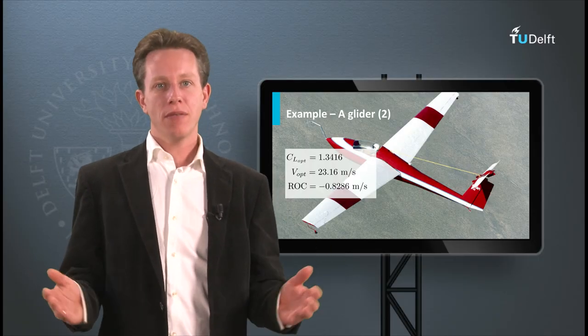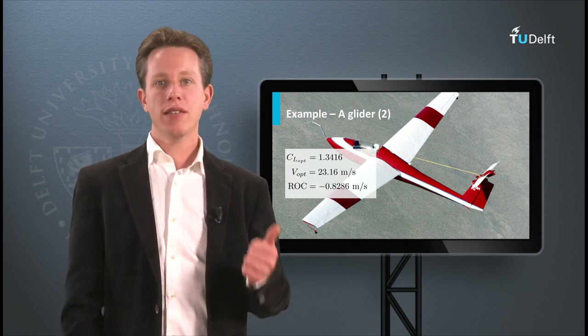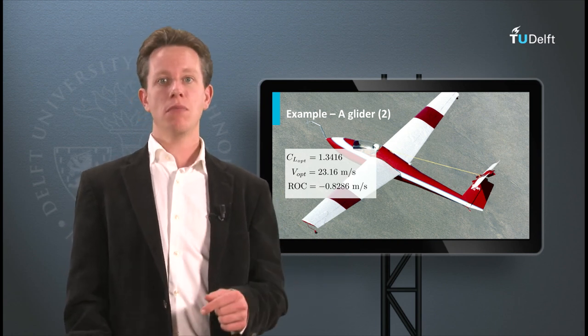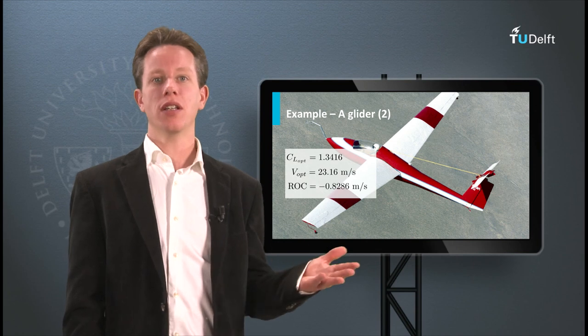So summarizing, if the lift drag polar, aircraft weight, and air density are known, the minimum rate of descent can be calculated.